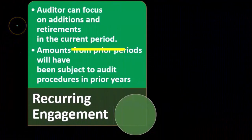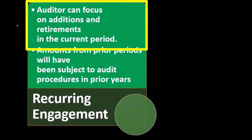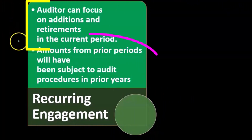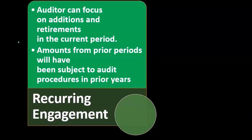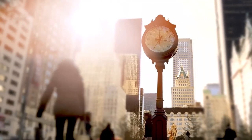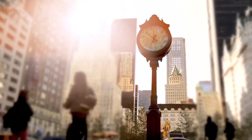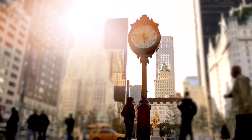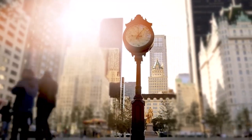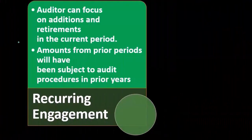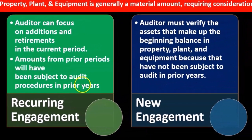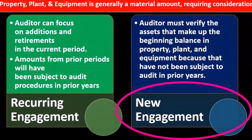The auditor can focus on additions and retirements in the current year, since amounts from prior periods will have been subject to audit procedures previously. Property, plant, and equipment lasts for many years, so things purchased in the past were subject to prior audits, and we don't have to audit the purchasing process again as we would in new engagements. We can focus on new transactions that happened during the current period.